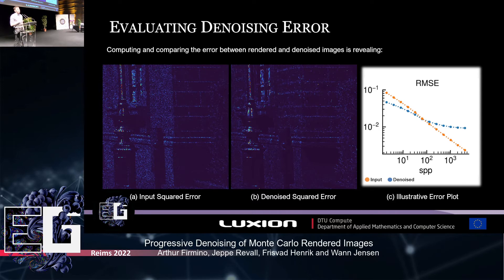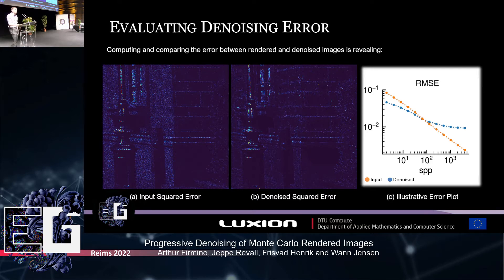Plotting the error of denoised and non-denoised images against the number of samples per pixel reveals a decrease in utility of denoising as the sample count increases. If the sample count is high enough, denoising might be counterproductive and decrease the overall image quality. A simple idea to improve denoising in that case would be to denoise only when it reduces the error. However, computing the exact error of a denoised image requires first rendering a ground truth image. We can instead use Stein's Unbiased Risk Estimate (SURE) to compute an estimate of the denoised image error, even without knowledge of the reference image.